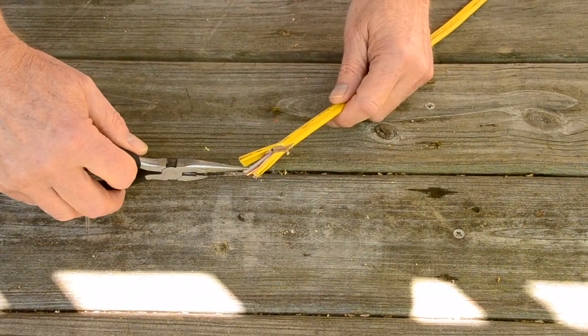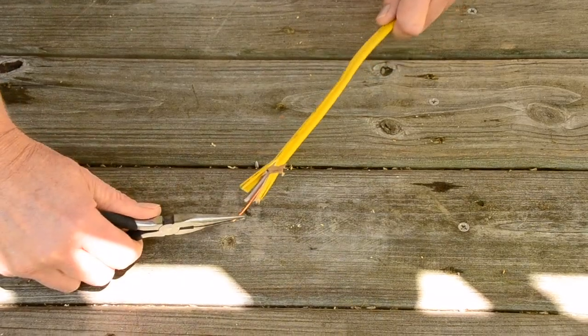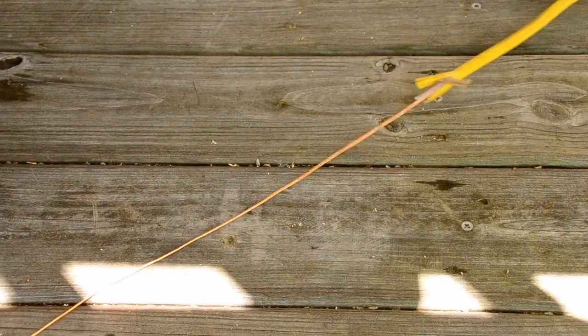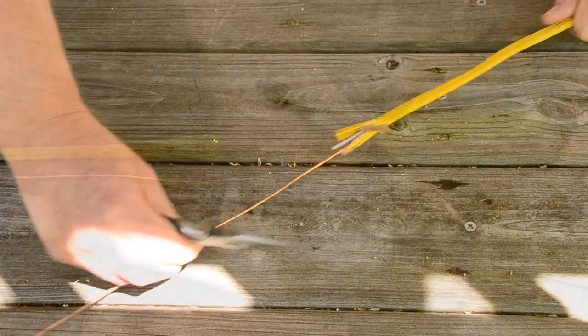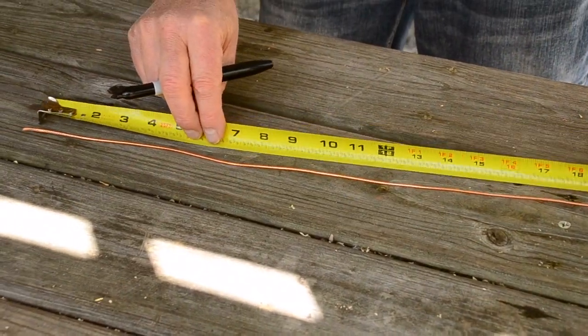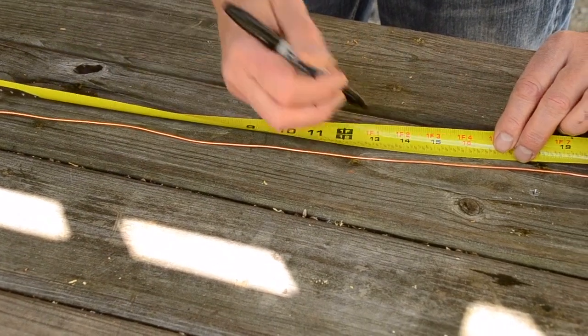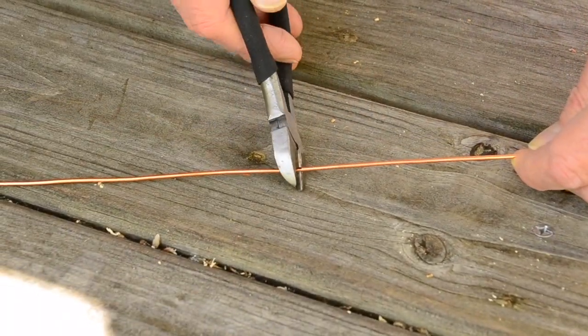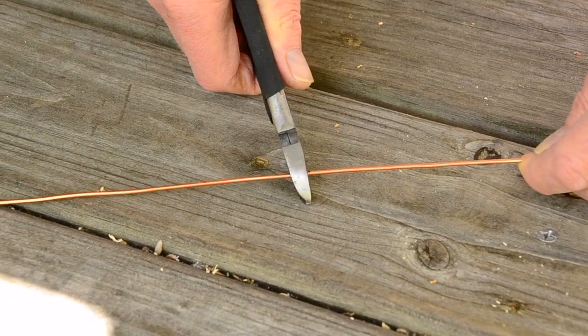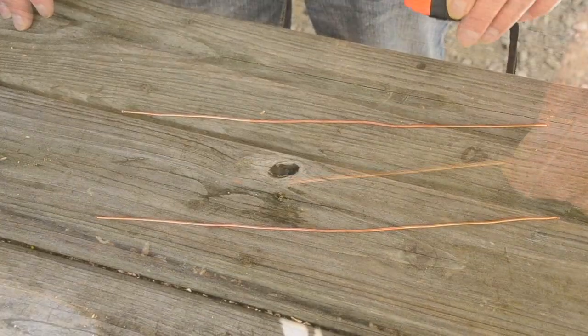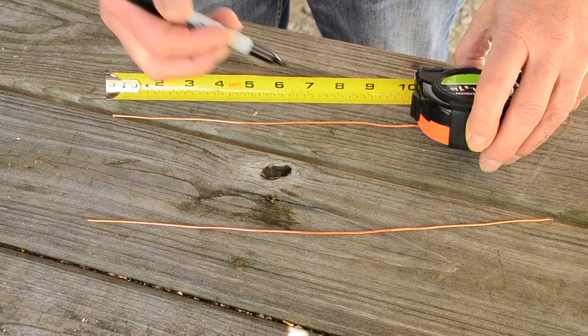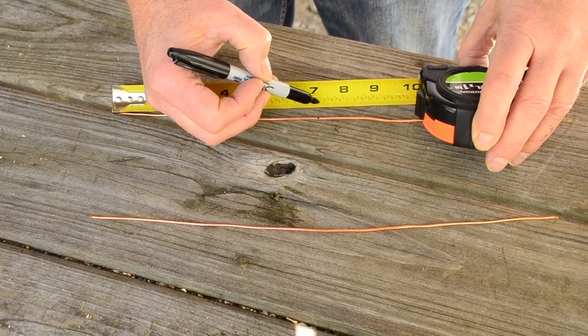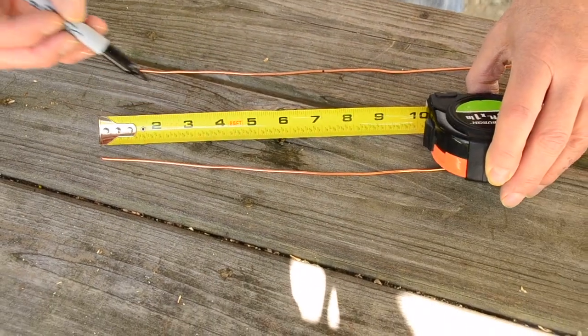Now we need some bare copper wire. I am pulling some number twelve ground wire out of an old piece of Romex cable. We will need eight pieces fourteen inches long. So mark the wires at fourteen inches and then cut. We will need to bend the wires at the seven inch mark. So mark each wire at seven inches. That is the half way point.